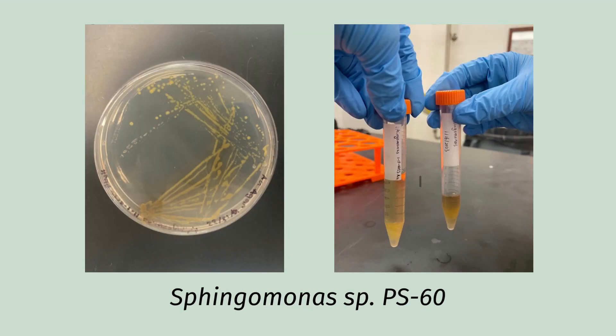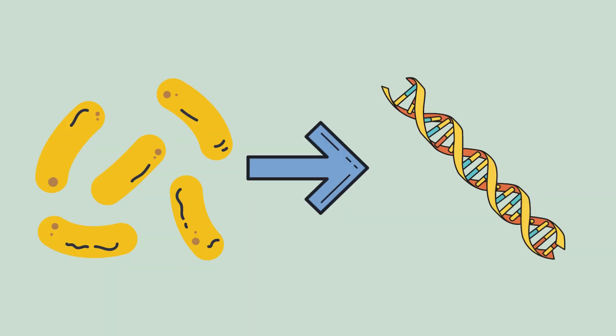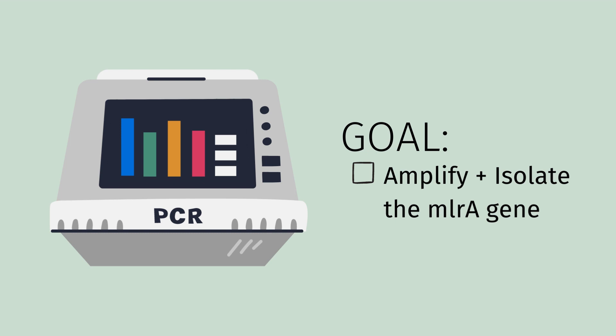To begin our project, we started growing Sphingomonas species PS60, a bacteria from the Sphingomonas family, in hopes of isolating the MLRA gene. Once we established a healthy culture, we performed DNA extraction and purification. Following extraction, we began PCR in hopes of amplifying and isolating the MLRA gene.